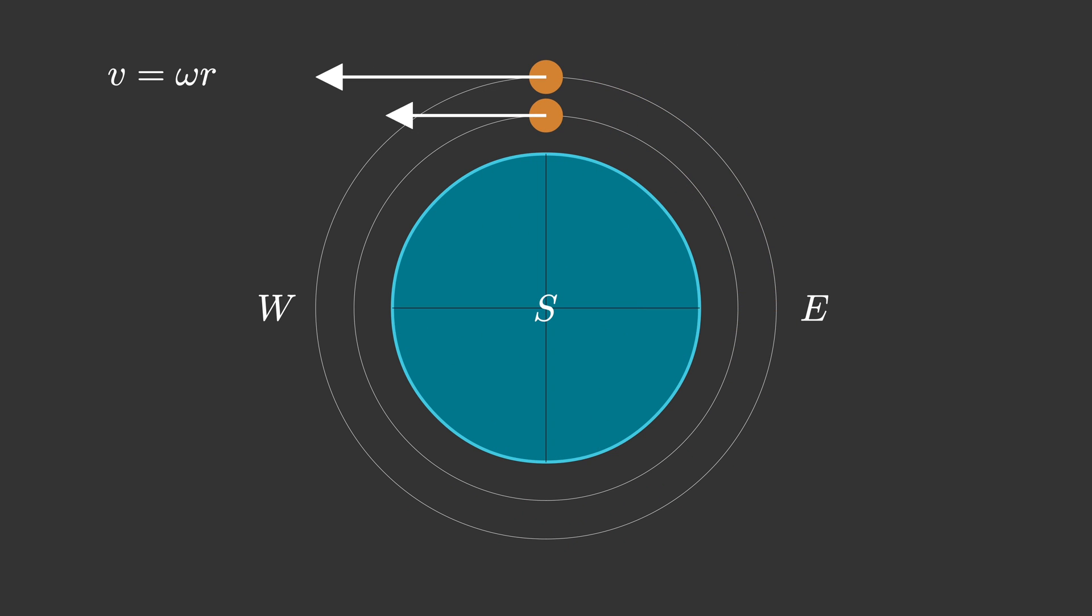On the contrary, if both objects have the same speed, then the one closest to the ground will complete a rotation before the other one.